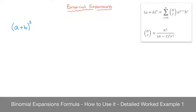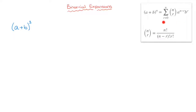Let's see how to write all of the terms in the expansion of a plus b raised to the power of 3 using the binomial expansions formula that we have in the upper right-hand corner of the screen. The only difference between a plus b raised to the power of 3 and a plus b raised to the power of n is that we've replaced n by 3. As a result, all we have to do is copy the right-hand side of this formula, replacing every n that we see by 3.